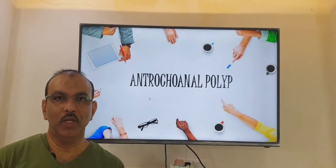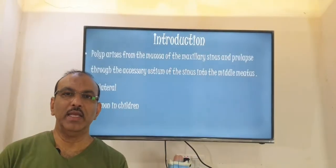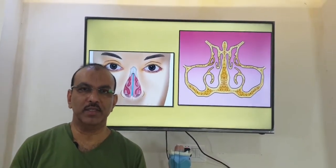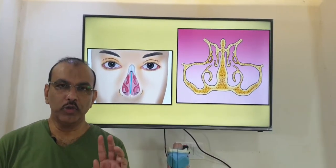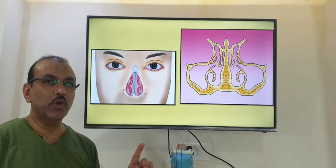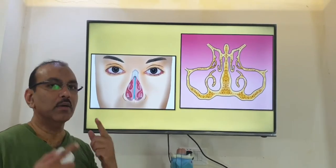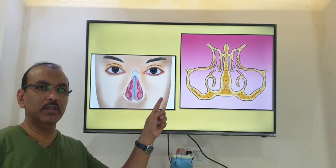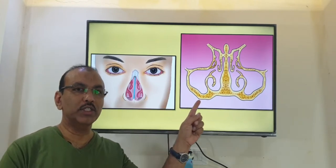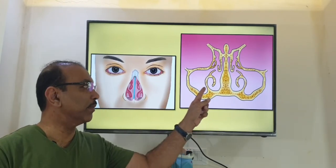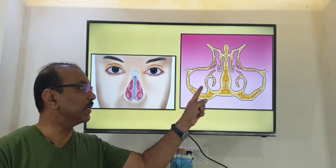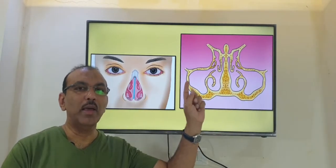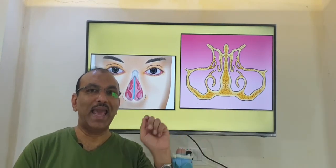Antrochoanal polyp. So totally in the skull, we have 8 sinuses, 4 pairs of sinuses. Out of the 8 sinuses, you have 2 in the bones here, 1 here, 1 here. As shown in the diagram here, this is one sinus, this is another sinus. This is called the maxillary sinus or maxillary antrum.